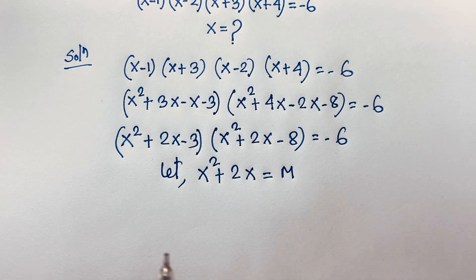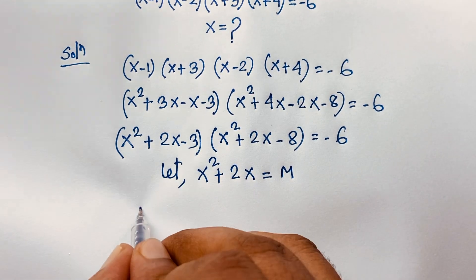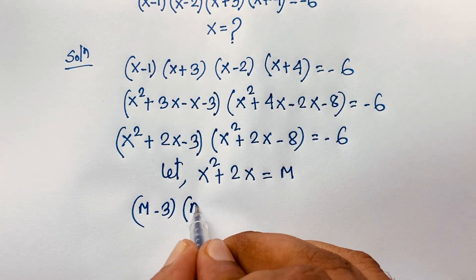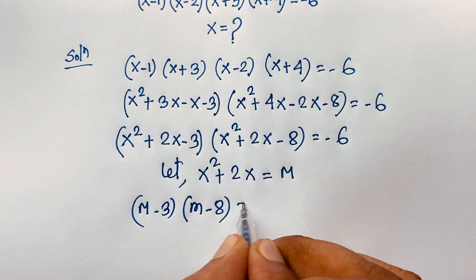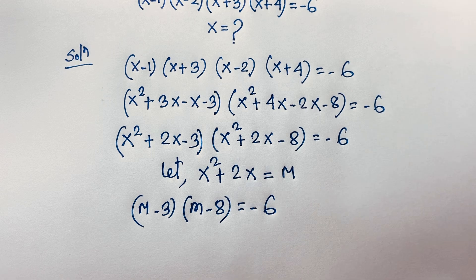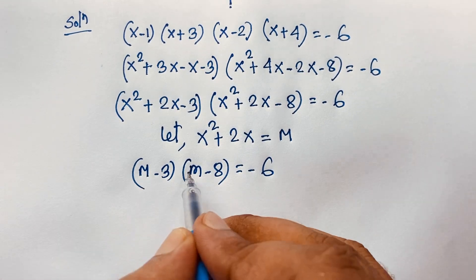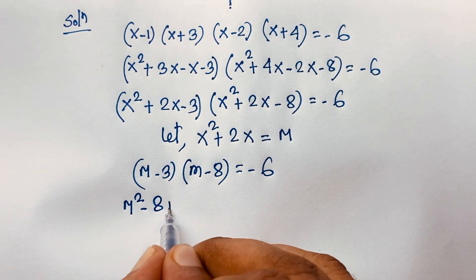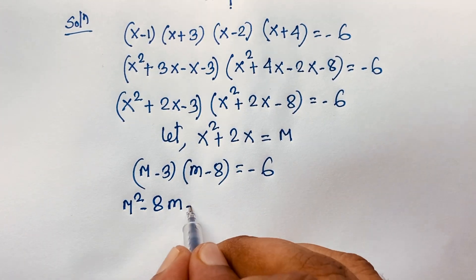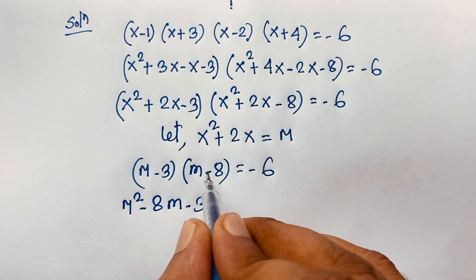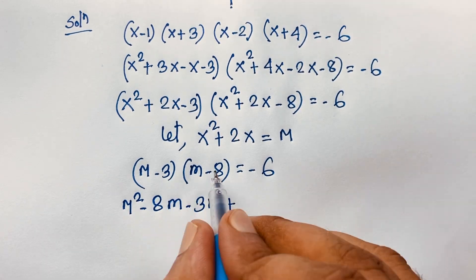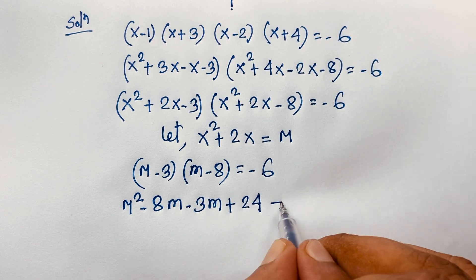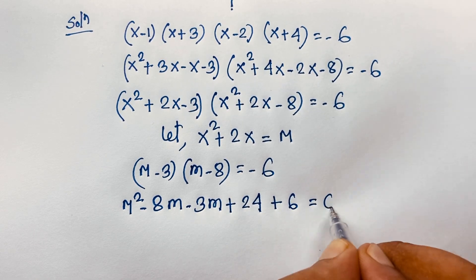Now we can write (m minus 3)(m minus 8) equals negative 6. Expanding: m squared minus 8m minus 3m plus 24, which gives m squared minus 11m plus 24.